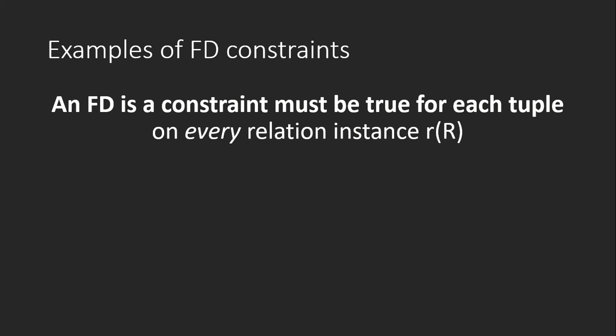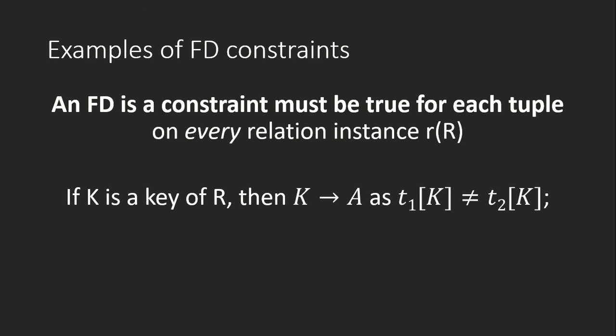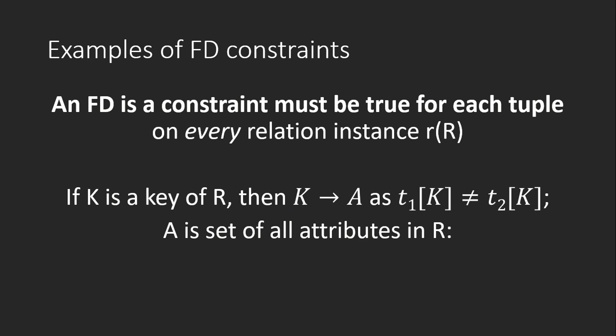At any instance of the relation, the FD must hold true for each and every tuple or row in the table. Now, if K is a key of relation R — meaning K is the primary key, or a set of attributes which is the primary key of R — then K must be able to identify the set of all attributes in R.